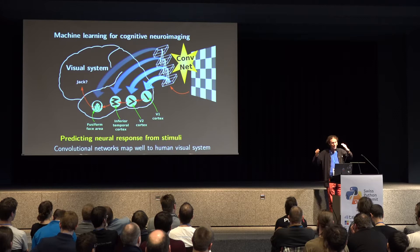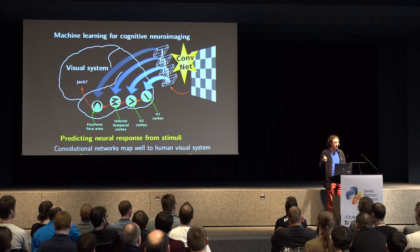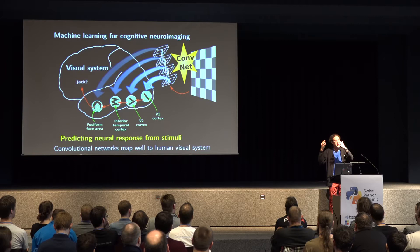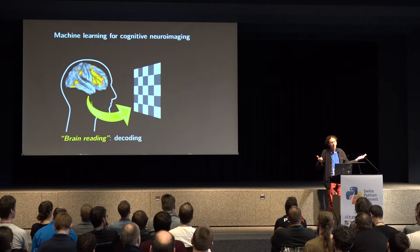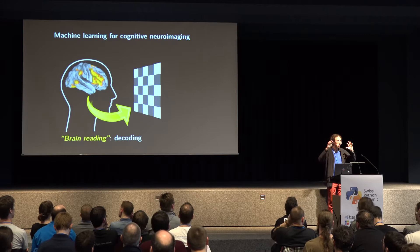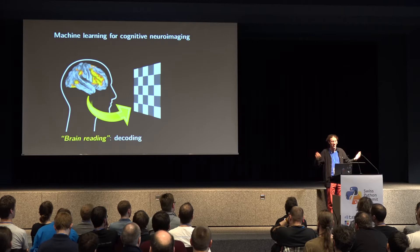We've taken a convolutional neural net and tried to look at its internal parameters to see if they explain well the data in the visual system brain activity. We've shown that artificial neural nets — convolutional neural nets — from a high-level perspective match pretty well the organization of the visual system. The converse is that we look at brain activity and try to come to conclusions on the stimuli. The media love this because we can call it brain reading, and there's a lot of hype.